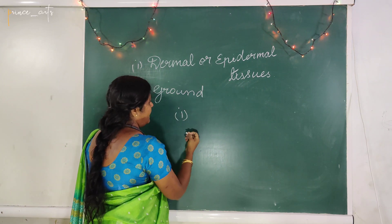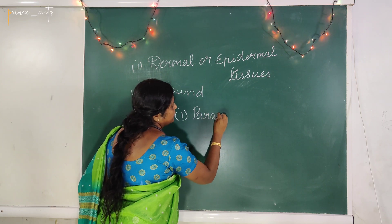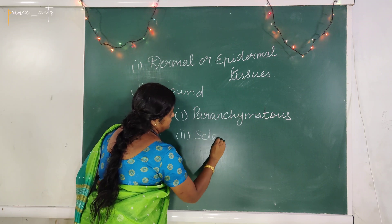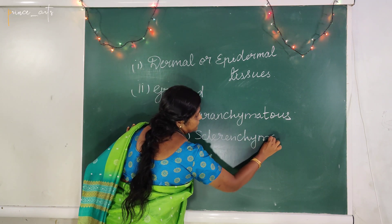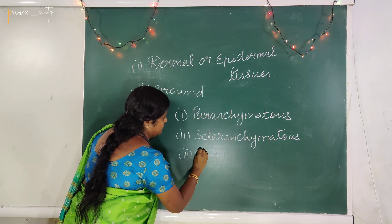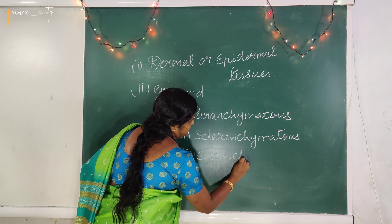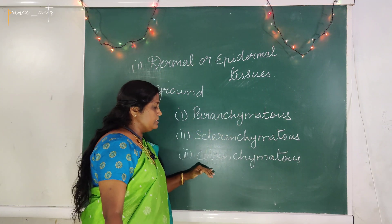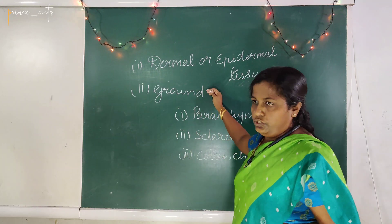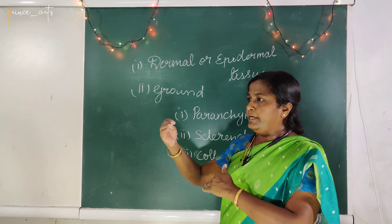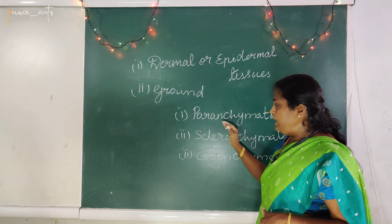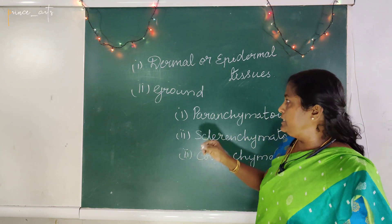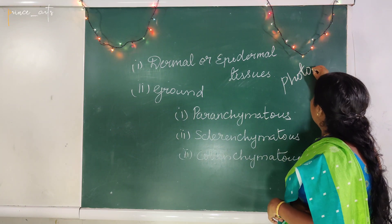In the ground tissue, there are parenchyma cells, collenchyma, and sclerenchyma. In the cortex, the parenchyma and collenchyma cells mainly perform the function of photosynthesis — the preparation of food material from raw materials using light (photo means light).